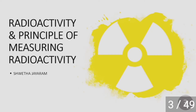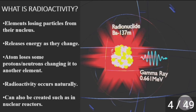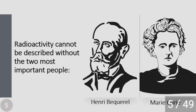My topic of discussion is radioactivity and the principle of measuring radioactivity. My name is Shweta Jayram. So what is radioactivity? It is simply elements losing particles from their nucleus and releasing energy as they change. An atom has a definite amount of protons and neutrons present in the nucleus — for example, sodium has 11 protons and 12 neutrons. When it loses some of its protons, sodium is not sodium anymore; this atom loses some protons and neutrons, changing into another element. Radioactivity is a natural process.